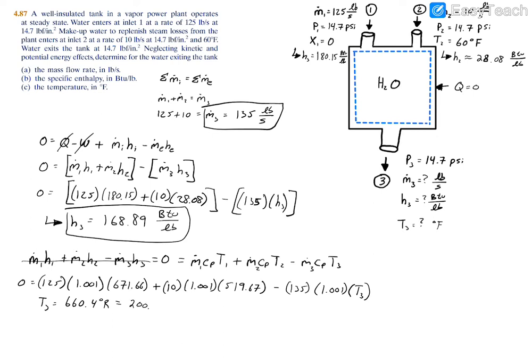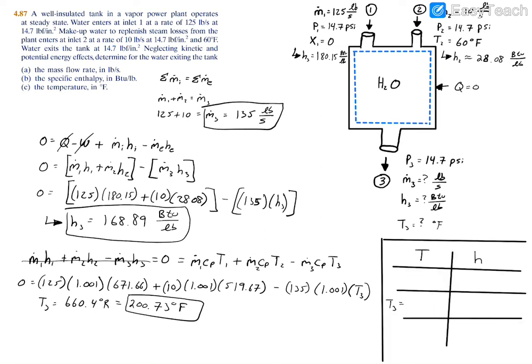To interpolate for T3, I'll set up a little table. At state 3, one thing we know for certain is that our enthalpy equals 168.89 BTU per pound. We need to interpolate around this 168.89. But first we need to figure out what table to use.